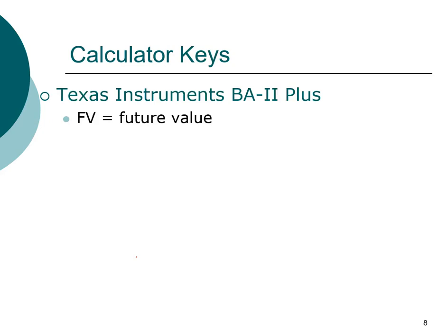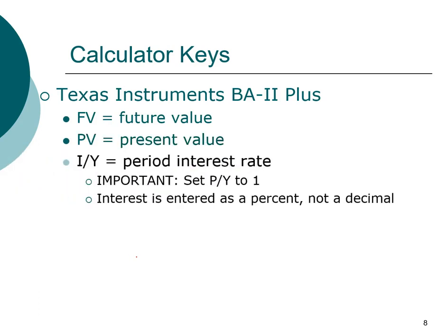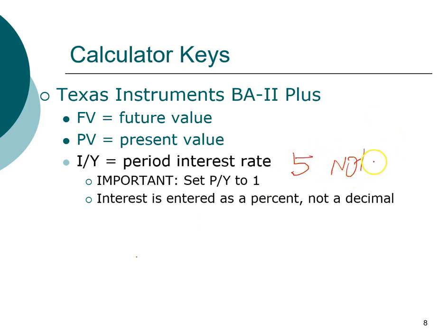You'll probably be very familiar with this by the end of this chapter. FV stands for future value, PV stands for present value. This register is the period interest rate — the interest per period. An important reminder: interest is entered as a percent, not as a decimal. For example, if the interest rate is five percent per year, you enter the number five, not 0.05, because the calculator recognizes the entry as a percentage.